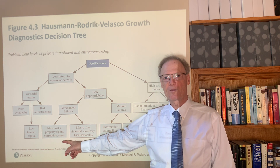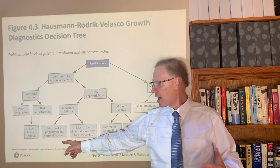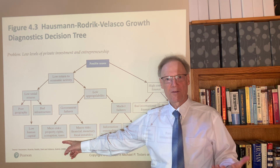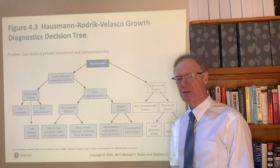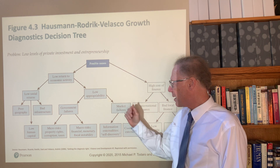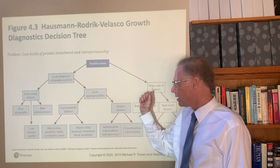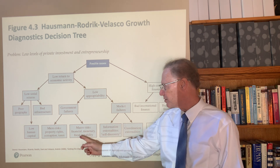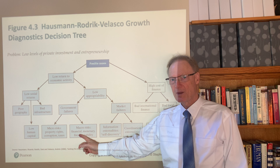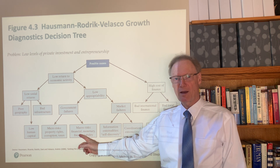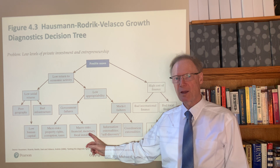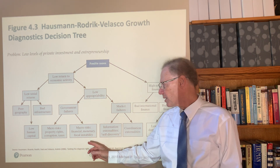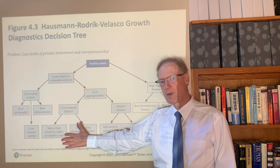Also, taxes — not the mere existence of taxes, but taxes that are so high as to be confiscatory, leaving far too little room for a firm to be profitable. With respect to macro risks through government failures, this can include financial instability, failure to get policies in place to prevent the onslaught of financial market crises, monetary policy problems such as failure to get inflation under control, and fiscal instability. These are a set of areas that could be the binding constraint on growth.